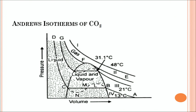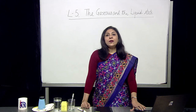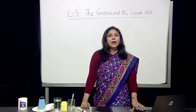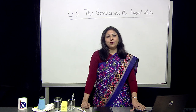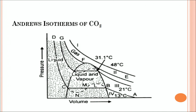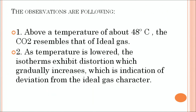Andrews took carbon dioxide, tried to liquefy that gas, and plotted a graph between pressure and volume at various temperatures. His experiment investigated the behavior of carbon dioxide by analyzing pressure P versus volume V at different temperatures. Above the temperature of about 48 degrees Celsius, carbon dioxide resembles an ideal gas — it behaves as a gas whether the temperature is 50 or 51 degrees Celsius.